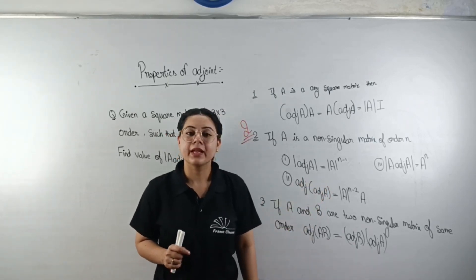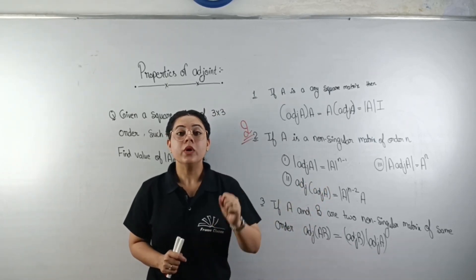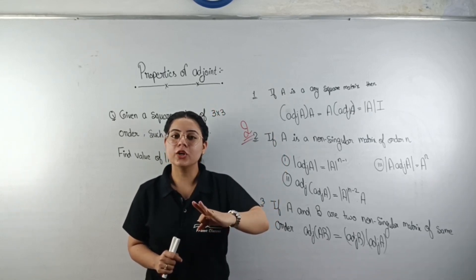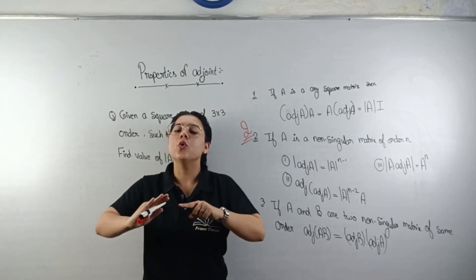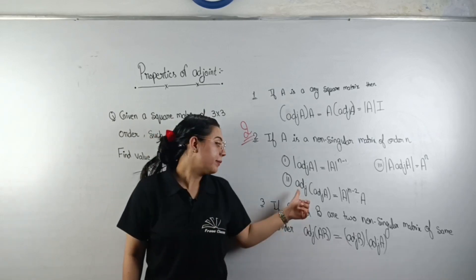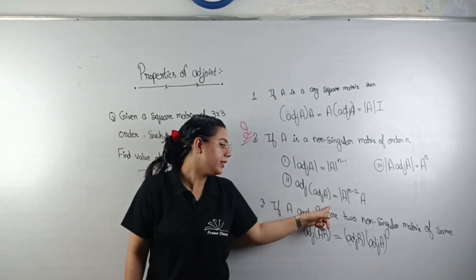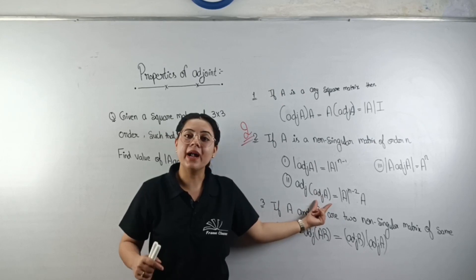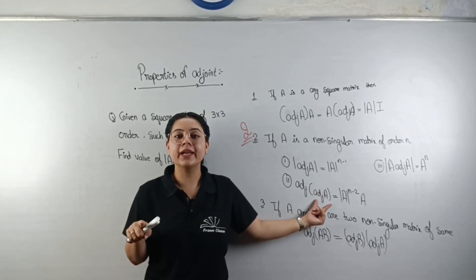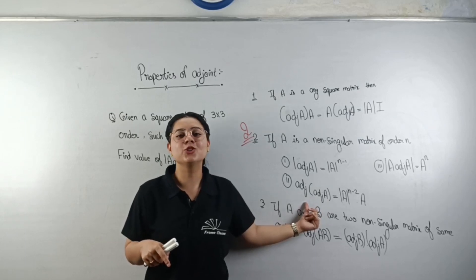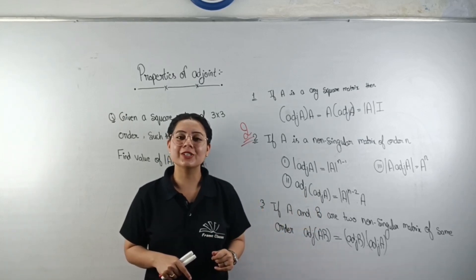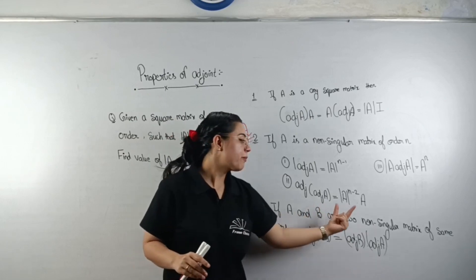Now, if I ask you to calculate the adjoint of the adjoint of a matrix — that means adj(adj(A)) — do you calculate it step by step? No. We will use the property directly instead of going through the full process.